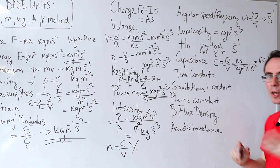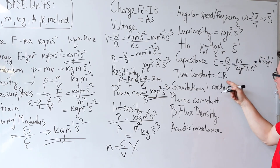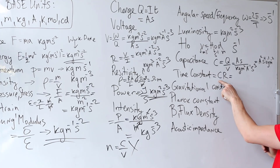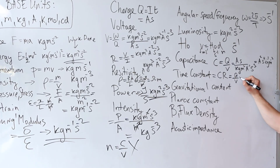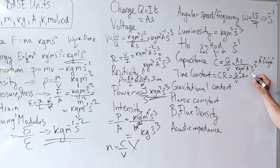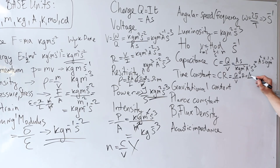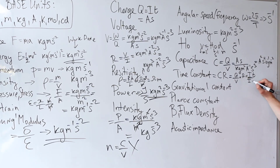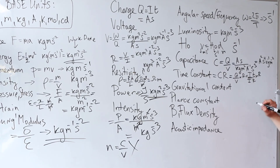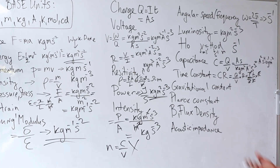Time constant — in a capacitor this is defined as C times R. We can simplify: C is Q/V and multiplied by R. Writing charge Q as I times t, and voltage as IR, the I and R cancel. What we're left with is just time, so the time constant has the base units of seconds.